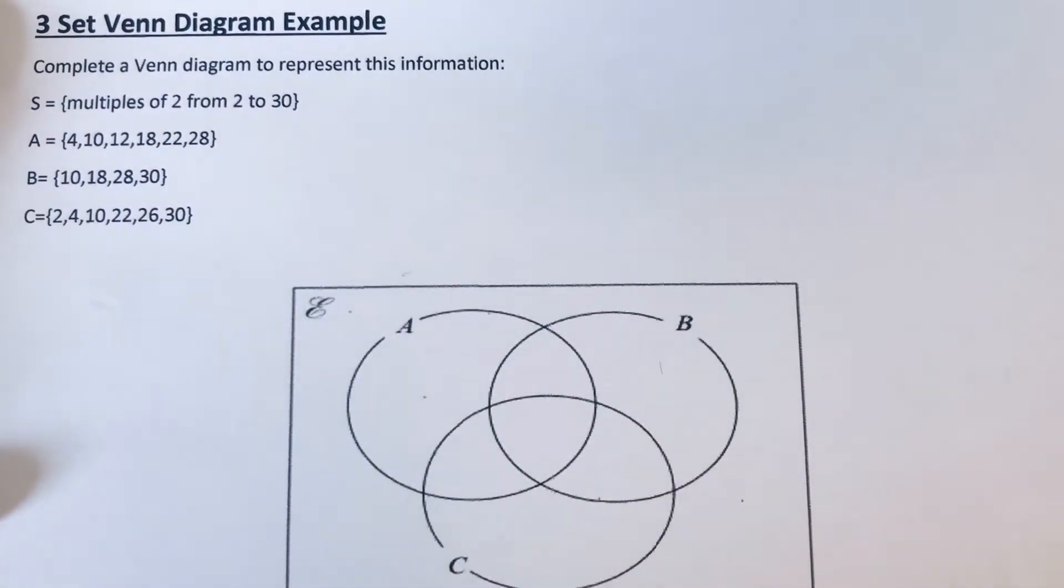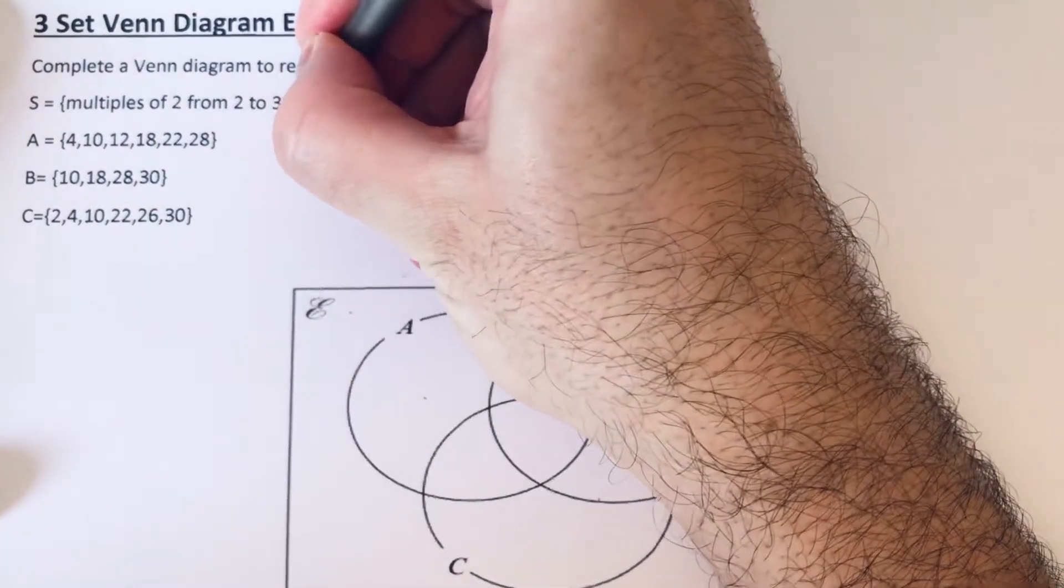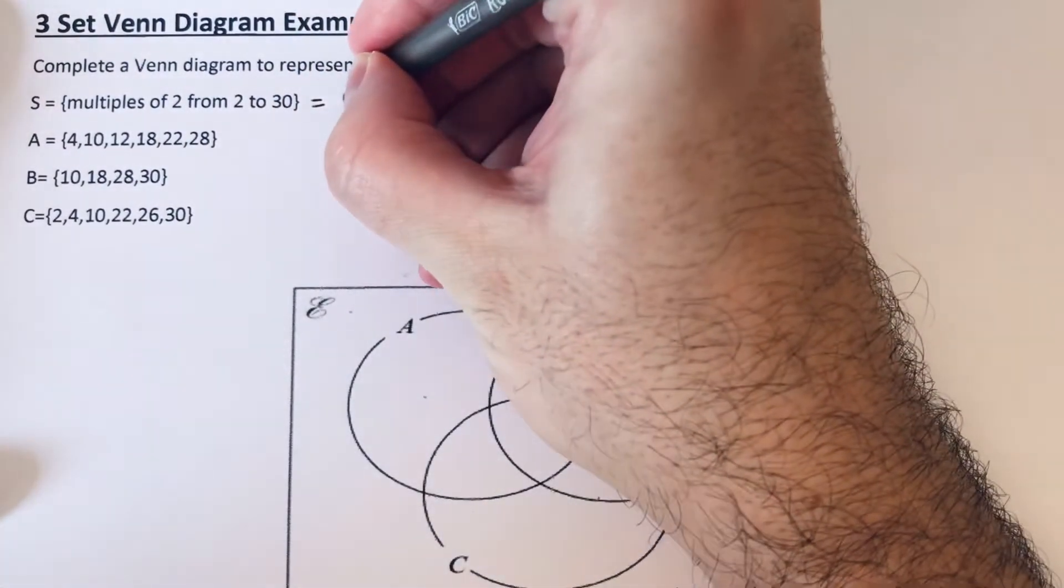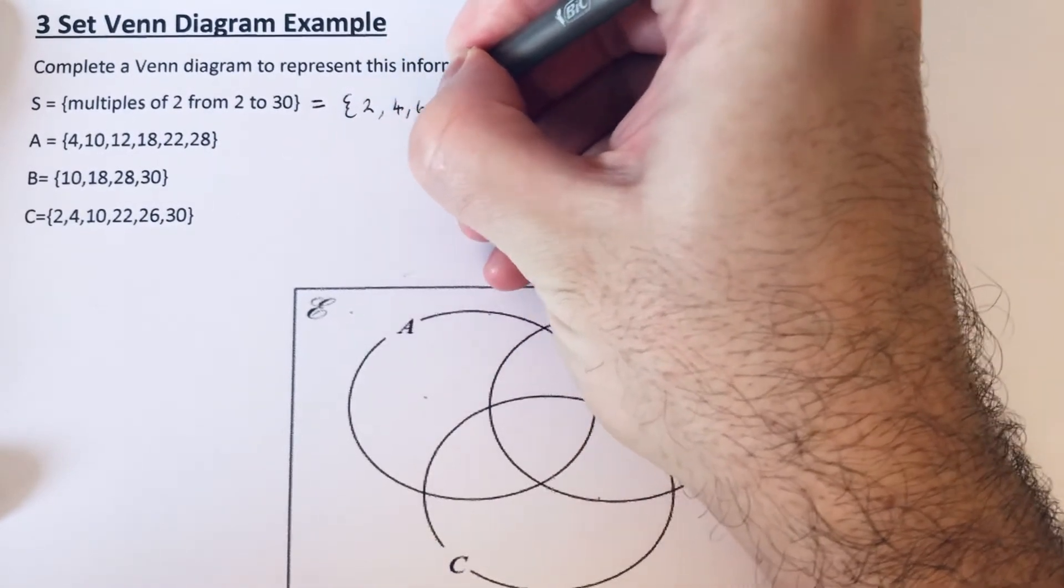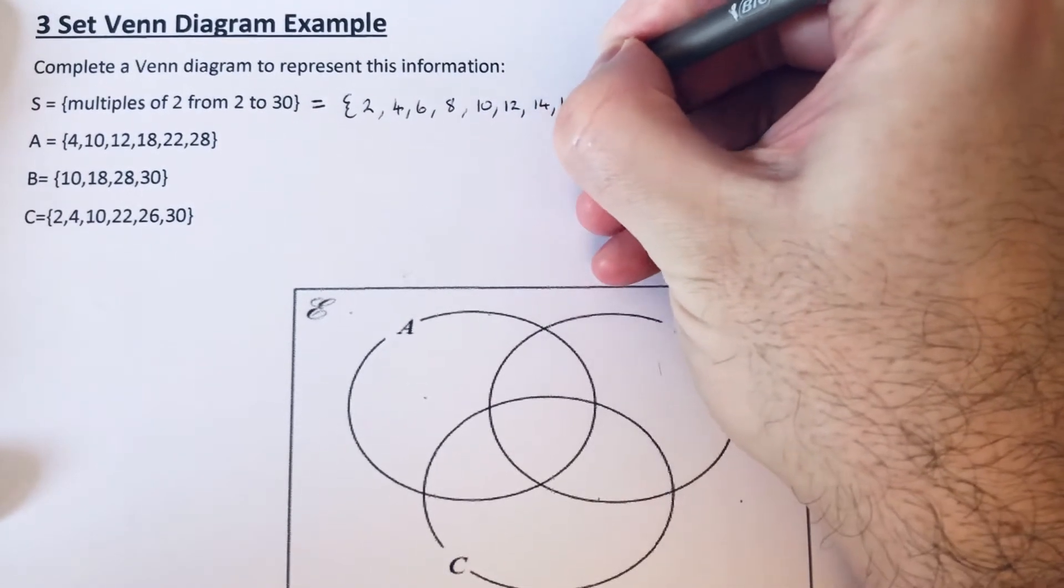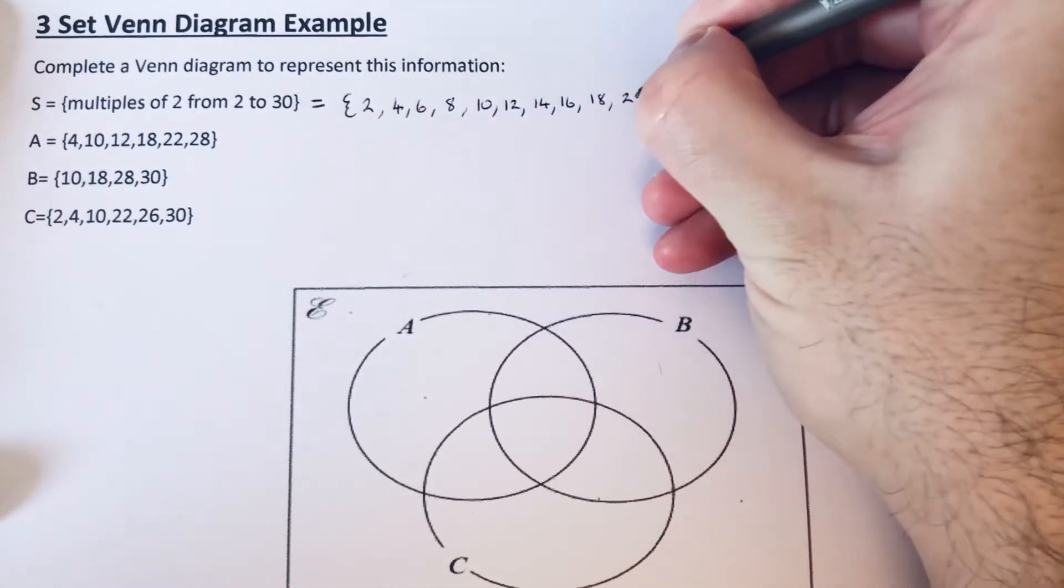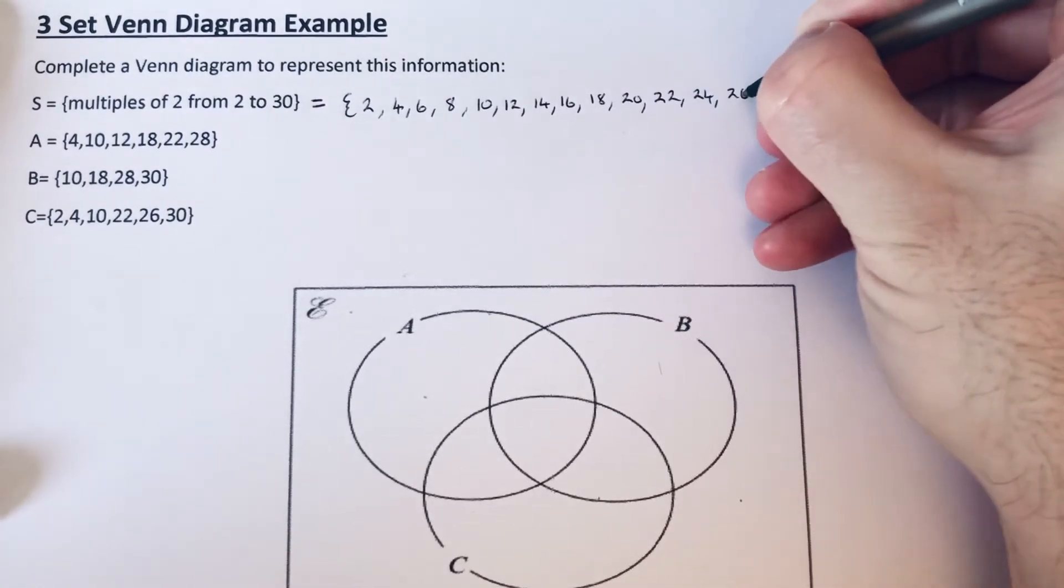So we need to put the multiples of 2 from 2 to 30 in the Venn diagram. So the numbers that we've got to put in are: 2, 4, 6, 8, 10, 12, 14, 16, 18, 20, 22, 24, 26, 28, and 30. There's 15 numbers there.